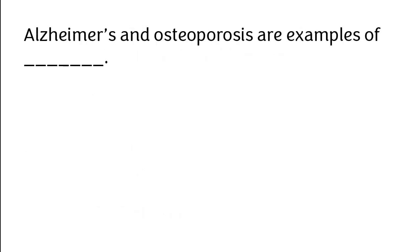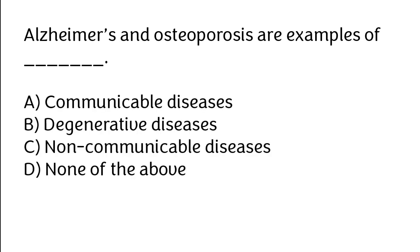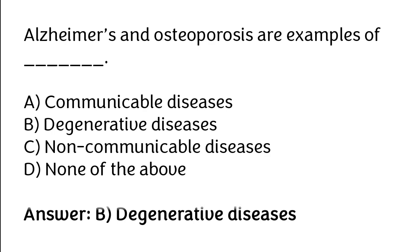Alzheimer's and osteoporosis are examples of: communicable diseases, degenerative diseases, non-communicable diseases, none of the above. The correct answer is option B: Degenerative diseases.